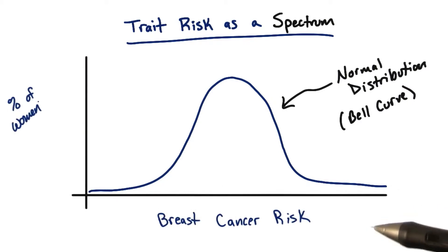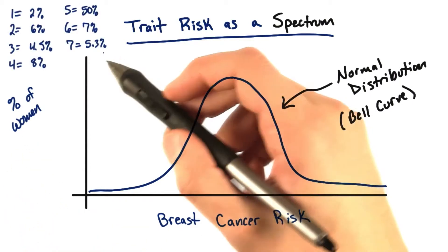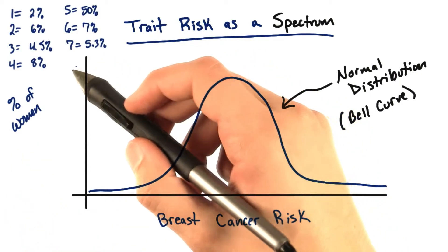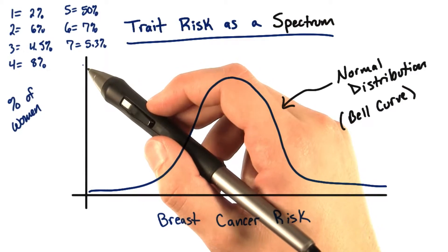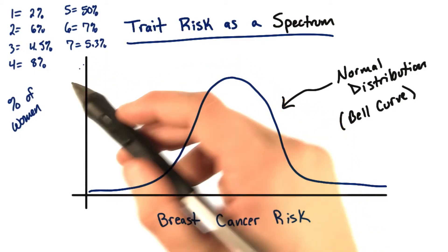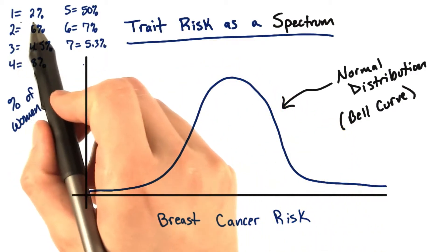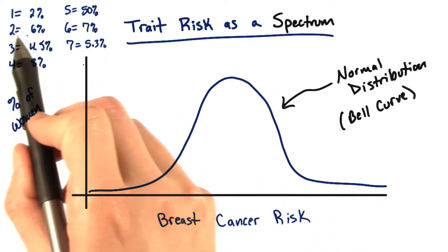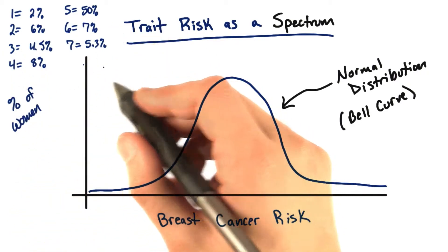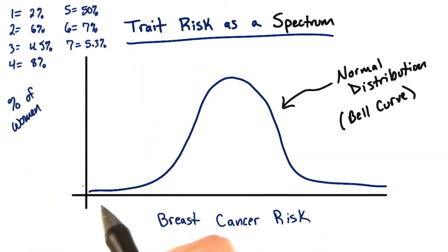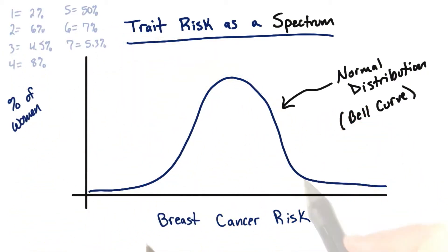Let's imagine that this is the risk distribution curve for breast cancer in a population of women. What this means is that we took a population of women, let's say in the United States or elsewhere, and we tallied each individual's risk for breast cancer. And then after tallying everything up, we put it in this graph here.